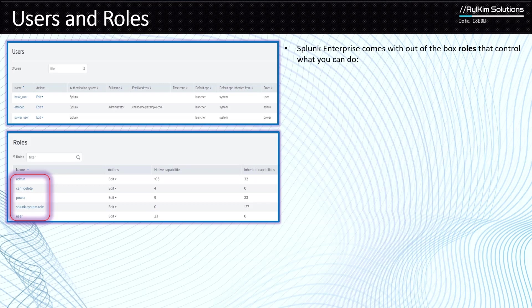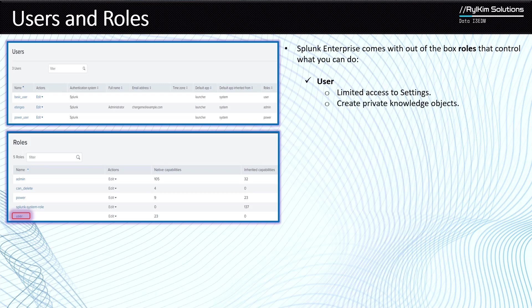We focus on three main roles because those are the three main roles that you can actually assign to users when creating them within your Splunk instance. The first one is the user role, and the user role is the one that has the least capabilities. Access to settings is limited — when you go to the settings menu with only the user role, you will not be able to see all the menu items.